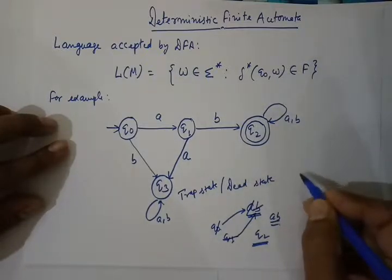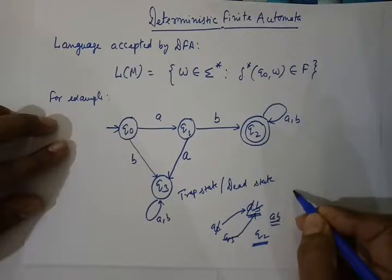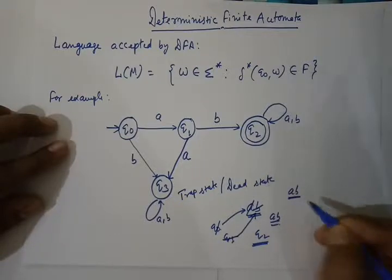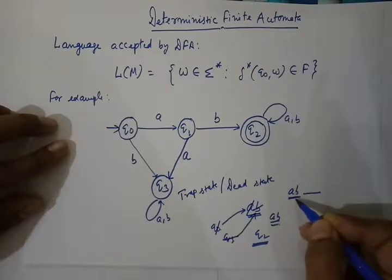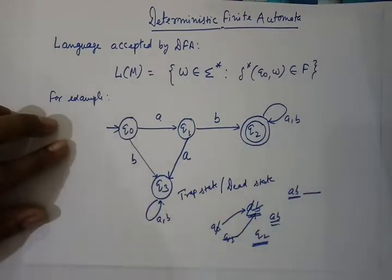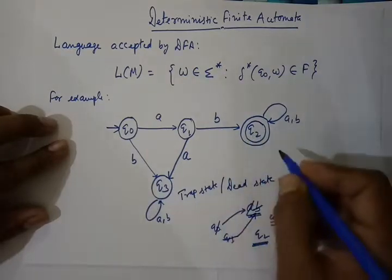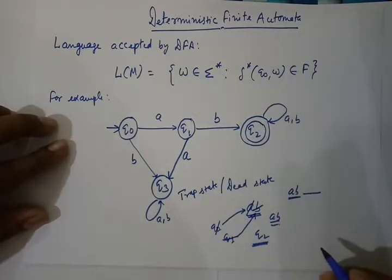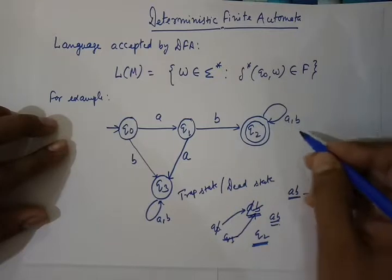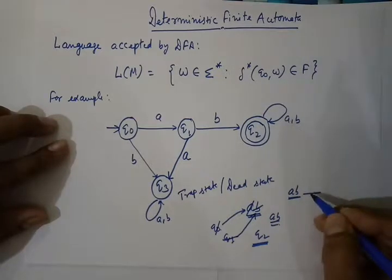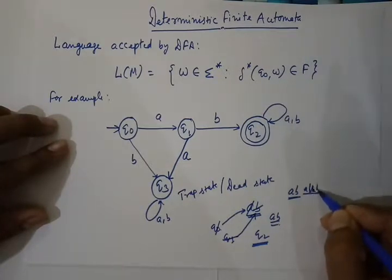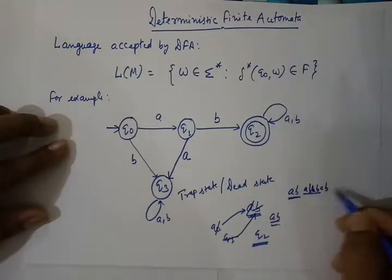Similarly, we can notice that all strings in which AB is a prefix will be accepted by this DFA, because after getting AB we are at final state Q2 and there is a self-loop. So no matter how many symbols follow — AB, ABAB, infinitely many — it can be accepted.